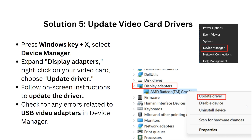Solution 5: Update video card drivers. Press Windows key plus X and select Device Manager. Expand Display Adapters, right-click on your video adapter, and choose 'Update Driver.' Follow the on-screen instructions to update the driver, and check for any errors related to the USB video adapter in Device Manager.